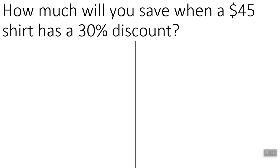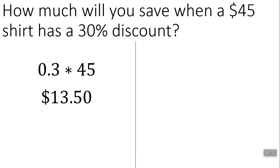So this first problem: how much will you save when a $45 shirt has a 30% discount? A lot of teachers have taught you to just go 30% of 45. On a standard calculator, you'd make your 30% into a decimal and then multiply by 45, and you get an answer — that's your savings amount on a $45 shirt.